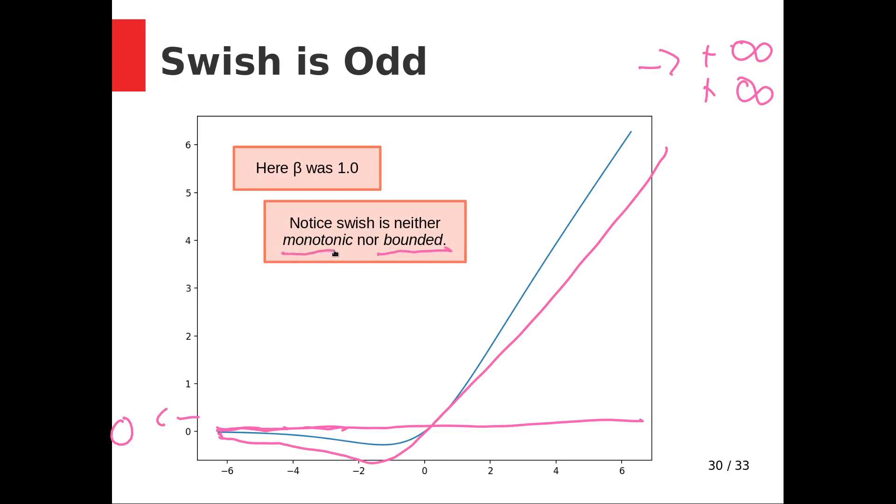So Swish is not bounded in the same way that ReLU wasn't bounded. Swish is not even monotonic. So again, if math was a long time ago, a function is monotonic if it is only increasing or only decreasing. All of the functions we've looked at have been monotonic, right? Tanh is only increasing. ReLU is either constant or increasing, it's constant over here and then increasing over here. Even the ELU, the exponential linear unit, is negative one, so it's pretty close to constant, and then it's increasing. All of these things are only increasing. Swish is not monotonic. It is decreasing for a little bit and then it increases.